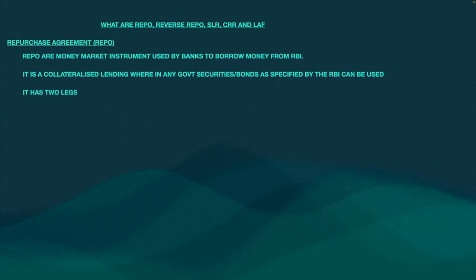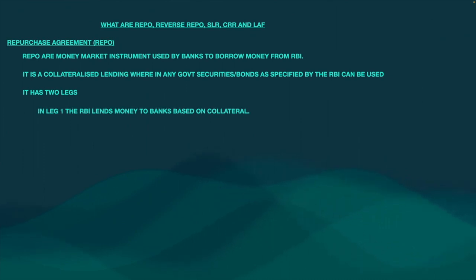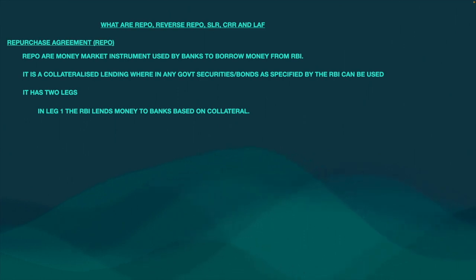A repurchase agreement has got two legs. Leg one is RBI gives money to the banks based on the collateral. So RBI gives 1 crore, for example, and says: you give us bonds equal to 1 crore which you have, and we will keep it. So as soon as you return that 1 crore, we will give you back those bonds.